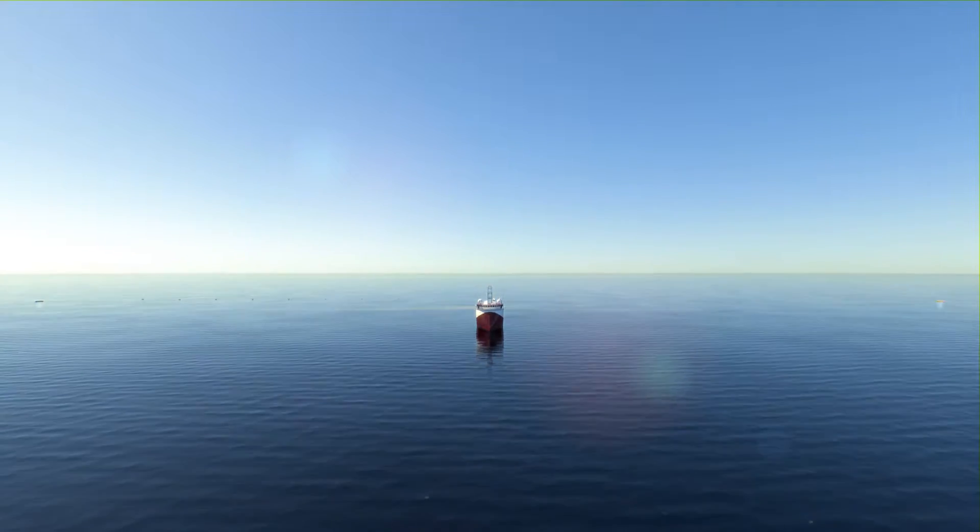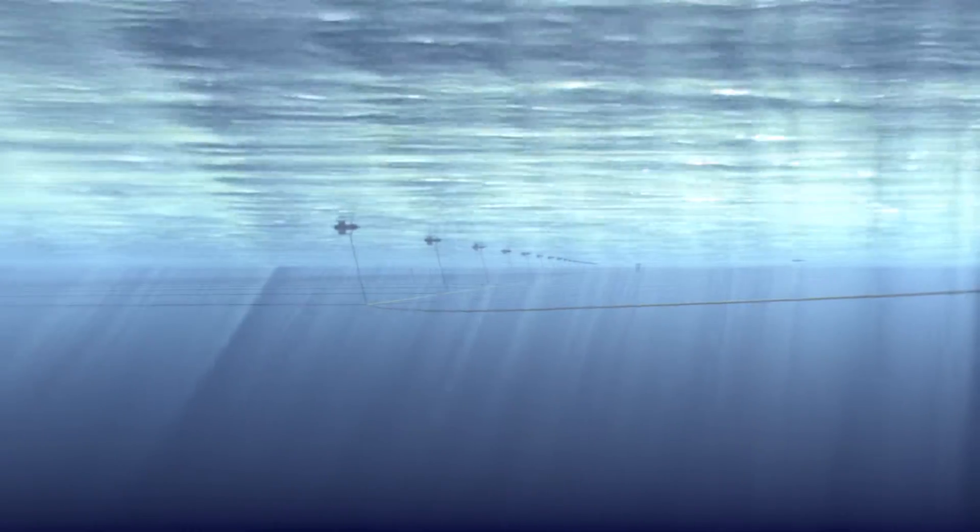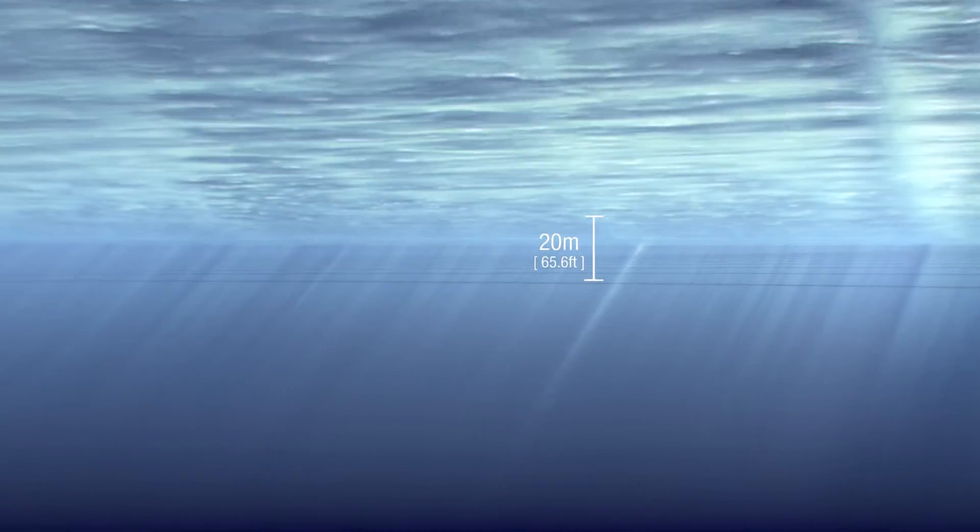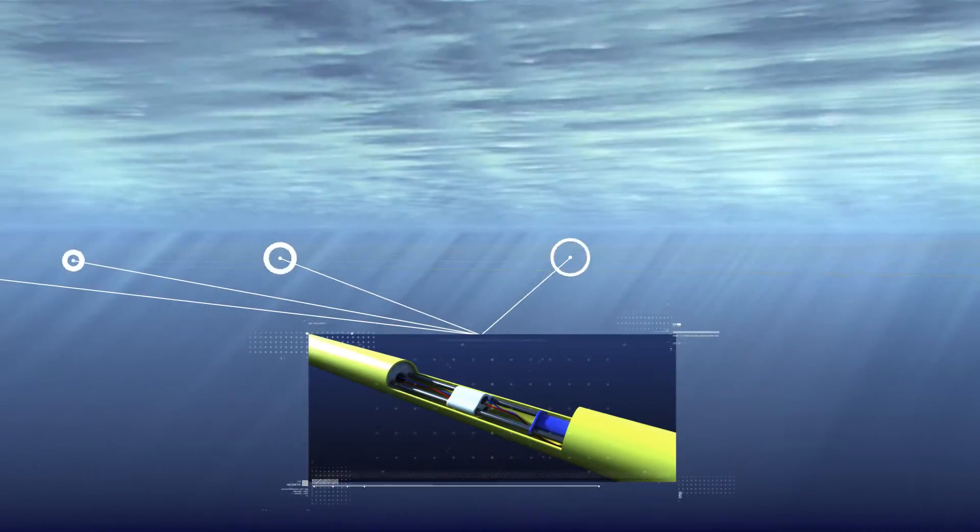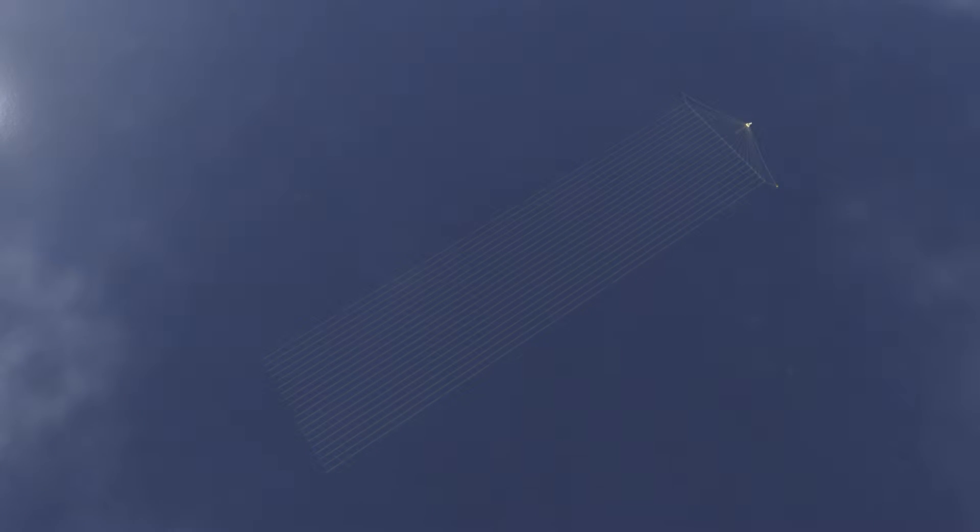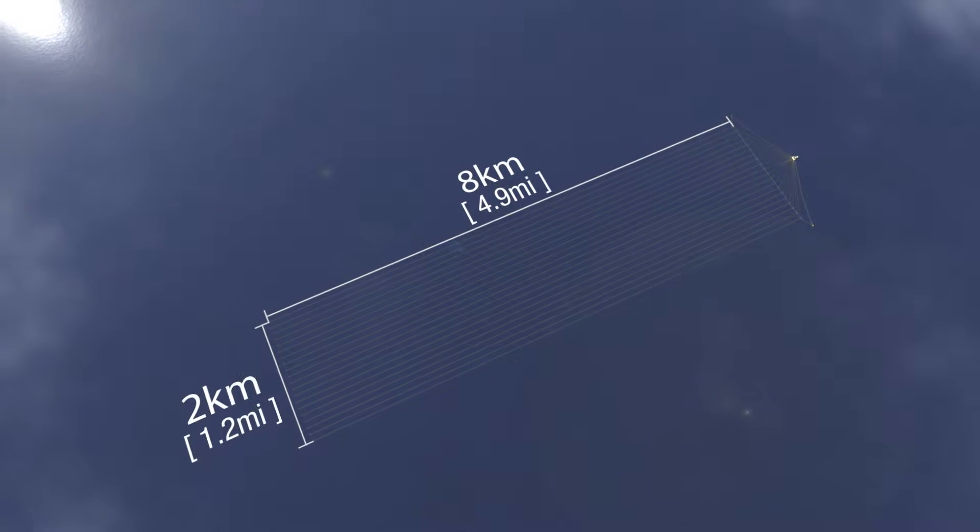Seismic surveys are conducted by large purpose-built vessels with specialized equipment. The vessels travel at slow speeds, less than five knots, and tow a series of cables called streamers below the waterline at depths up to 20 meters. They contain sensitive microphones called hydrophones that capture the seismic data. Depending on the number used, the streamer array can span up to two kilometers in width and eight kilometers in length.